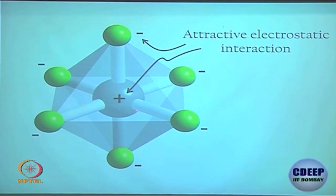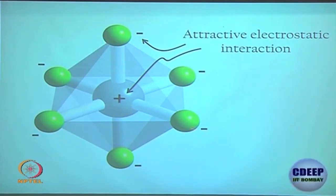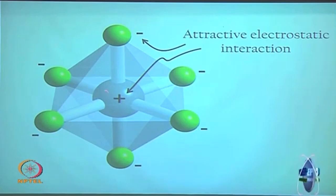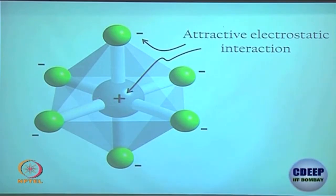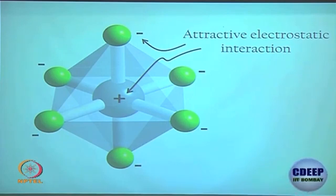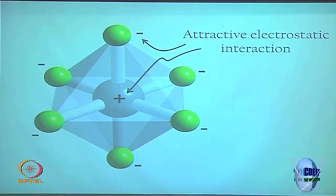The axial positions are where the d_z² orbital is directed. The four equatorial positions are where the d_x²-y² orbital points directly. From this, you can understand why d_z² and d_x²-y² are the most destabilized orbitals in an octahedral geometry — they are directly facing the ligands, so their electrons repel the ligand electrons most strongly.